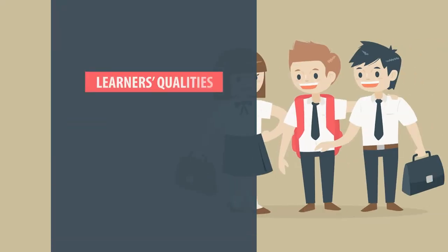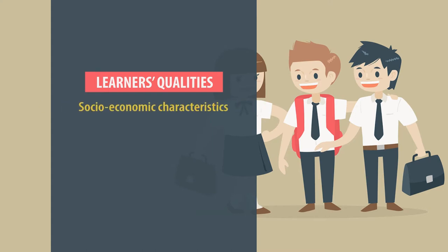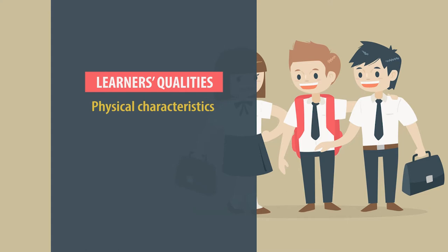The second basic consideration while selecting an approach to instruction is learner qualities. A teacher must be aware about the learners' qualities. We can classify these in different parts: the intellectual qualities or intellectual characteristics of the students, the socio-economic characteristics of the students, the psychological characteristics, and the physical characteristics of the learners. These qualities or characteristics of the learners also help in deciding which particular instructional approach will be adopted or will be appropriate for the teacher to enhance learning or to achieve the learning objectives.